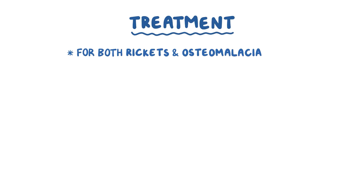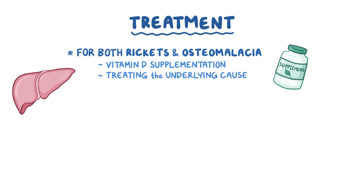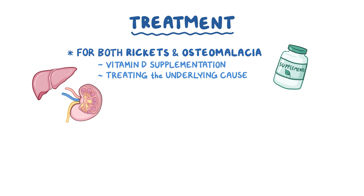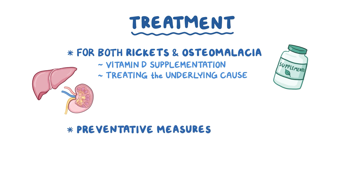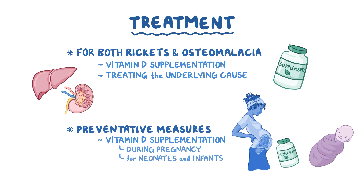Treatment for both rickets and osteomalacia typically involves oral vitamin D supplementation and treating the underlying cause, which could be any condition affecting the organs responsible for vitamin D activation. In addition, preventative measures include vitamin D supplementation during pregnancy and administering vitamin D drops to neonates and infants.